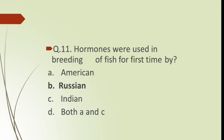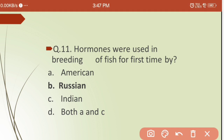Eleventh question: hormones were used in fish breeding for the first time by which country? Options are: (a) American, (b) Russian, (c) Indian, (d) both A and C. The correct answer is Russian — Russians were the first to use hormones for breeding of fishes.